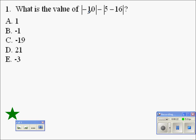Let's evaluate negative 10. The absolute value of negative 10 is 10 because negative 10 is 10 units away from 0.